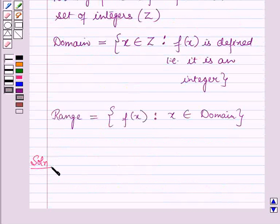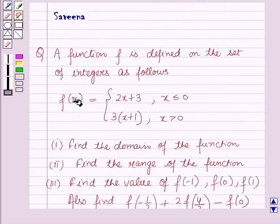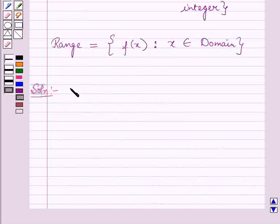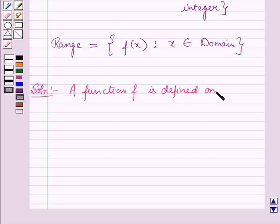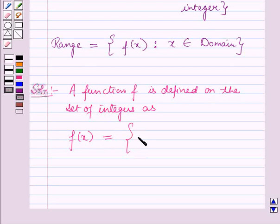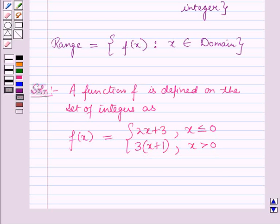Now we will start with the solution. The function is given to us: f(x) is equal to 2x plus 3 when x is less than or equal to 0, and 3 into (x plus 1) the whole when x is greater than 0. This is a single rule as it defines one function even though it involves two equations.